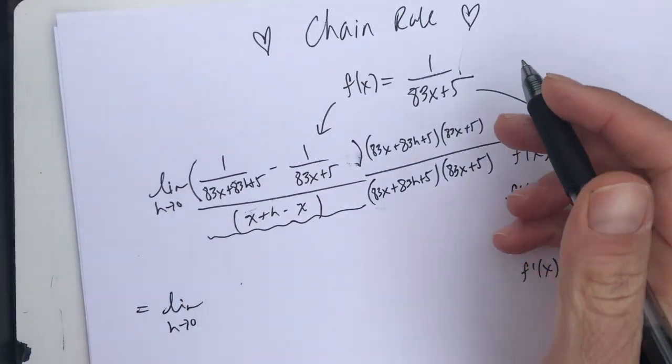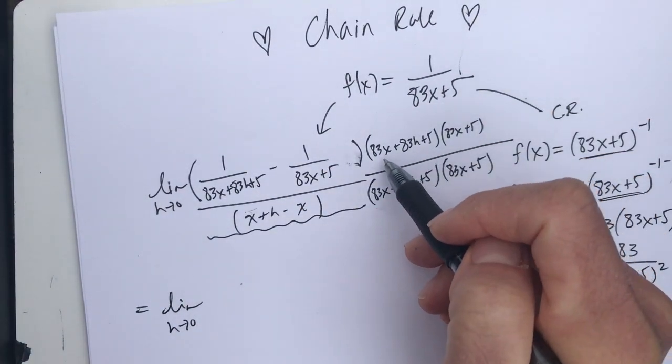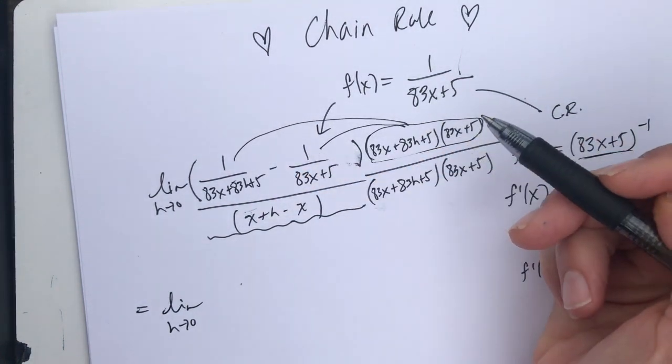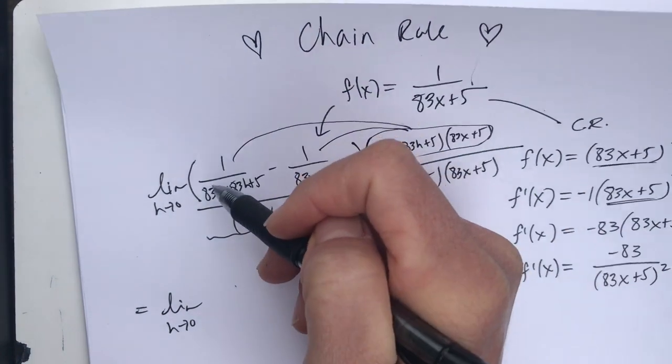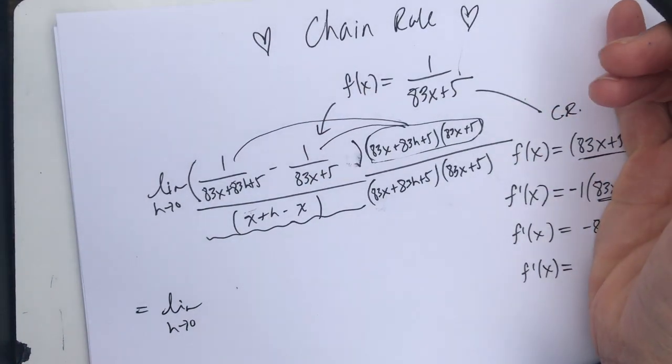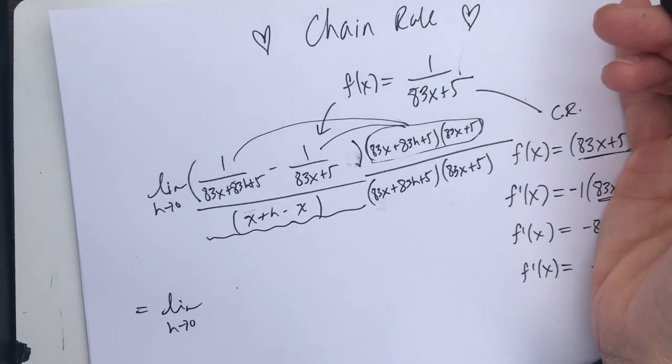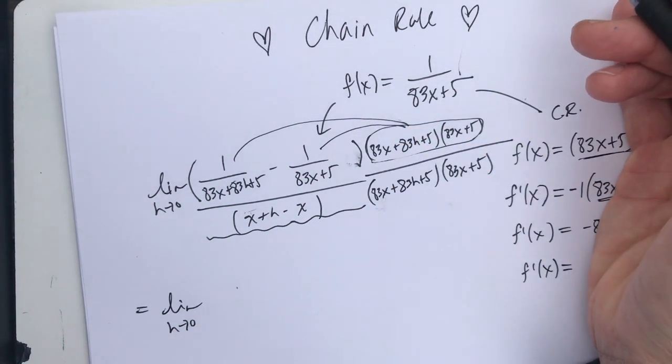When I simplify this, the limit of h goes to 0. When I distribute this numerator, I'm going to distribute this whole term to both of these terms inside. So when you distribute this, the 83x plus 83h plus 5, those two terms are going to cancel. And when I distribute to the second term, the 83x plus 5 over the 83x plus 5 are going to cancel.